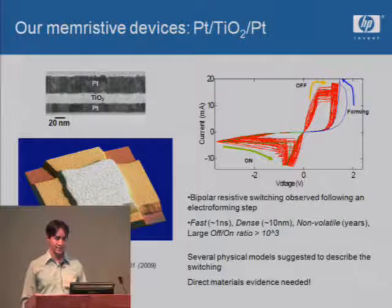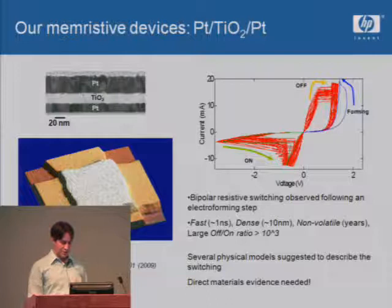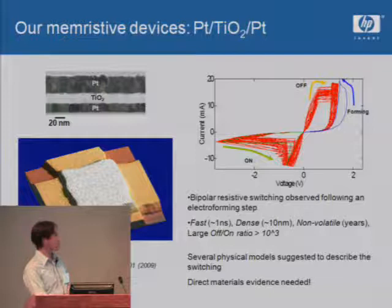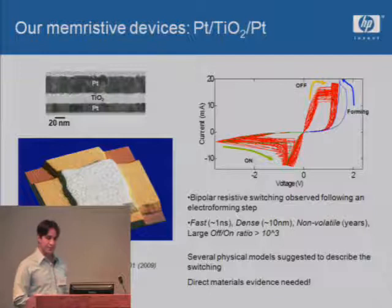In terms of physical behavior — what material changes are leading to these dramatic resistance changes — there are a lot of physical models that have been suggested. If you look in the literature today, people are still publishing all sorts of different ideas. My approach is to try to use direct materials evidence to pin one of these down.